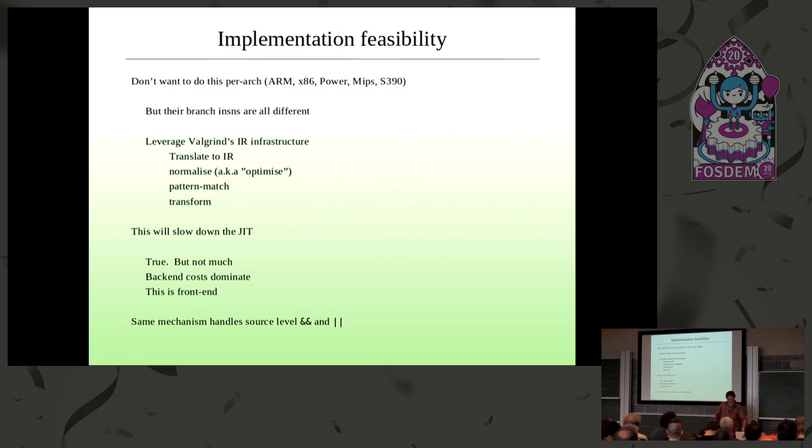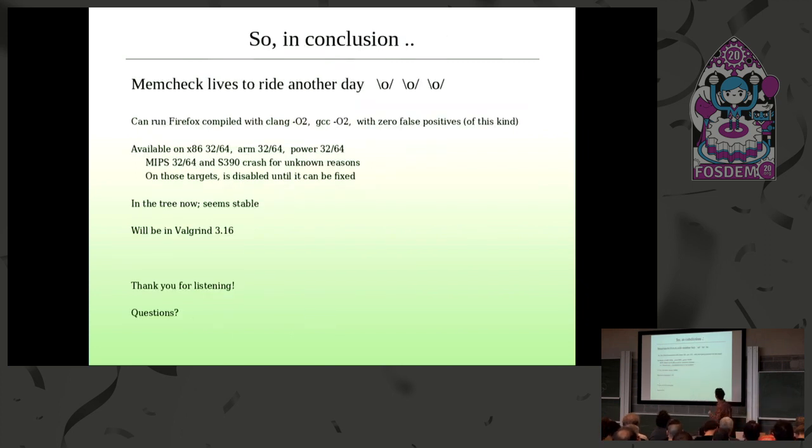I should point out as well, I've only talked about AND here, but the same mechanism logically handles OR because, in fact, an OR expression is just going to be compiled into the same style of tree as an AND expression. It's just that the conditions are swapped around via de Morgan's law. So it naturally handles that. And that's pretty much the end of the story. So Memtech lives to write another day, which I kind of thought it wouldn't at one point. I've tested this on Firefox and with Clang minus O2 and GCC minus O2, which is a pretty strident, pretty strict, hard test because it's really big and does all sorts of weird shit.